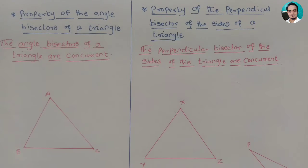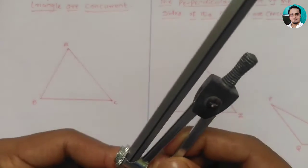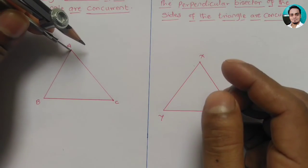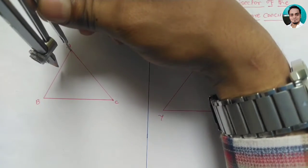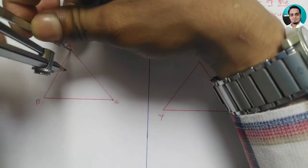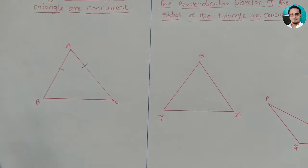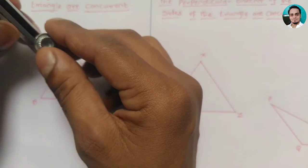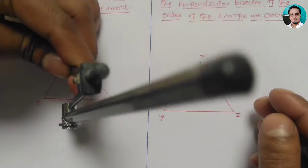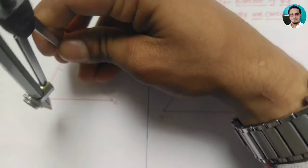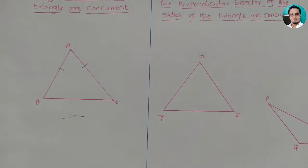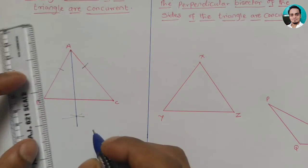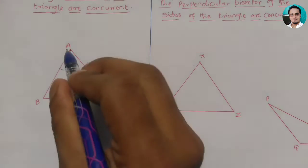Let's see how they match. We want to draw the bisector of angle A. We take a particular distance on the compass and cut both sides of angle A with an arc. Then we place the compass on those two points and draw intersecting arcs. Joining the intersection point to vertex A gives us the angle bisector of angle A.